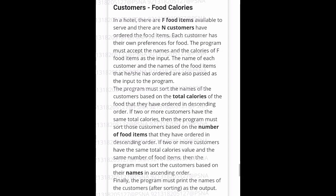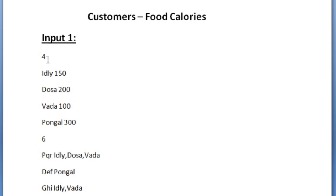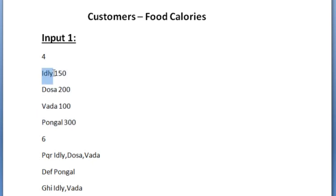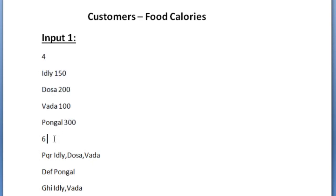This is the question asked in today's SkillRack daily challenge. In the first line of our input we are given the value of f, which is the number of food items available. Here f is equal to 4, so we are given four dishes as input. The first dish is Italy and its calories is 150, the second dish is dosa and its calories is 200.